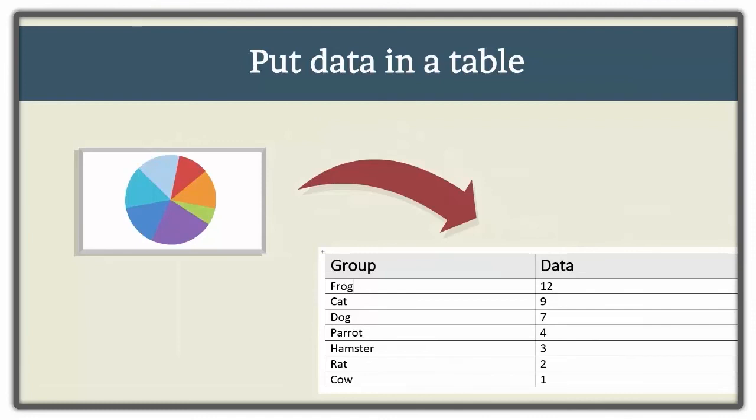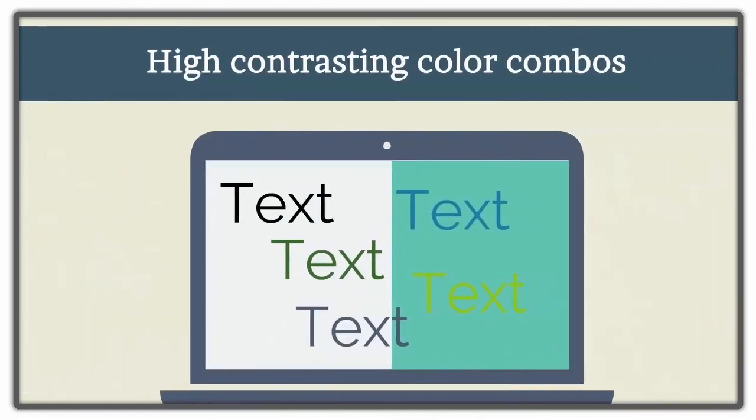The table should be properly created with a table caption and column and row headers. As a final note, people who are not fully blind but have low vision benefit from charts, graphs, and maps that use high contrasting color combinations.